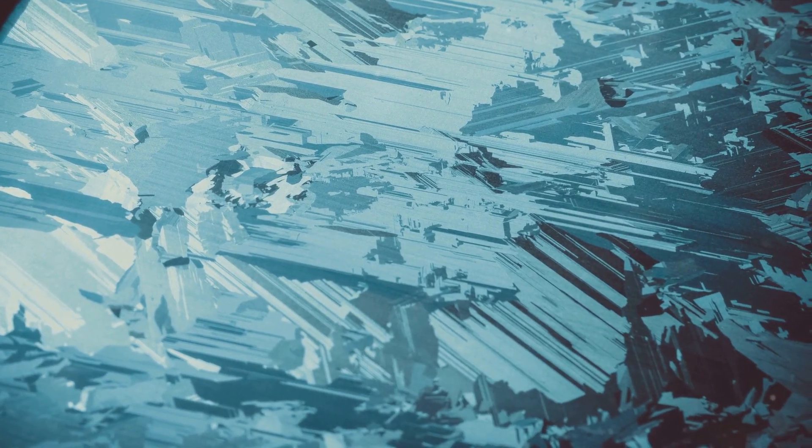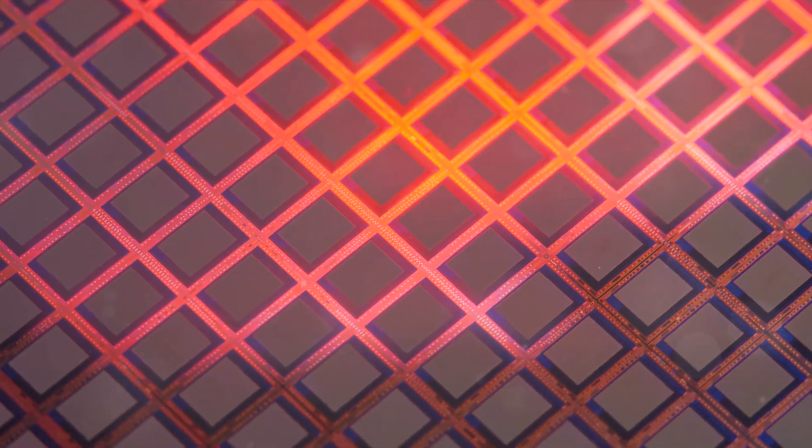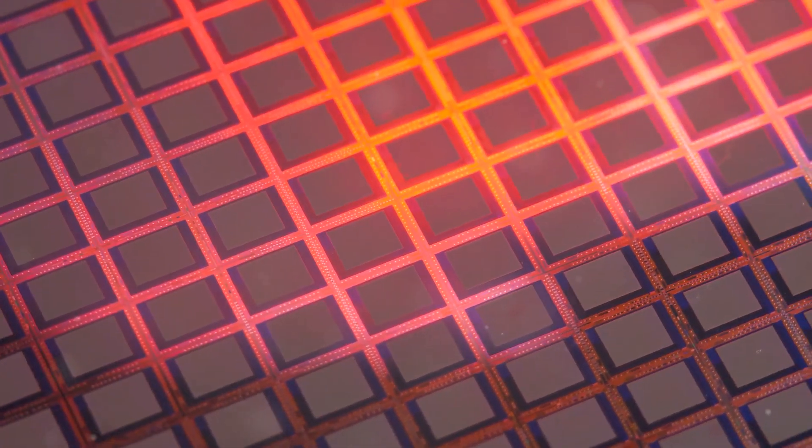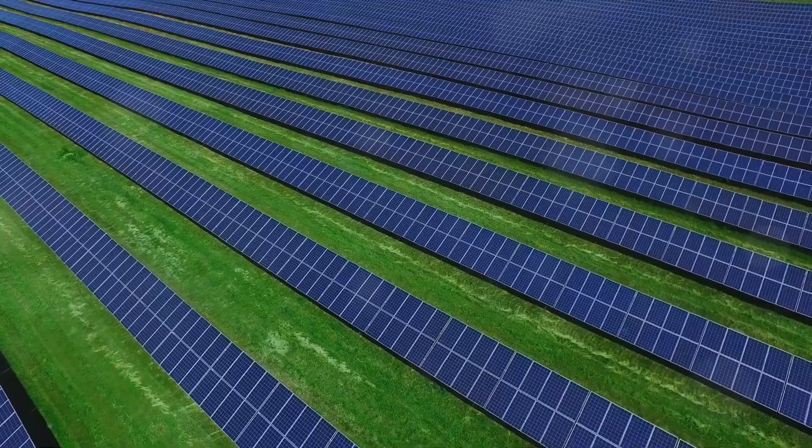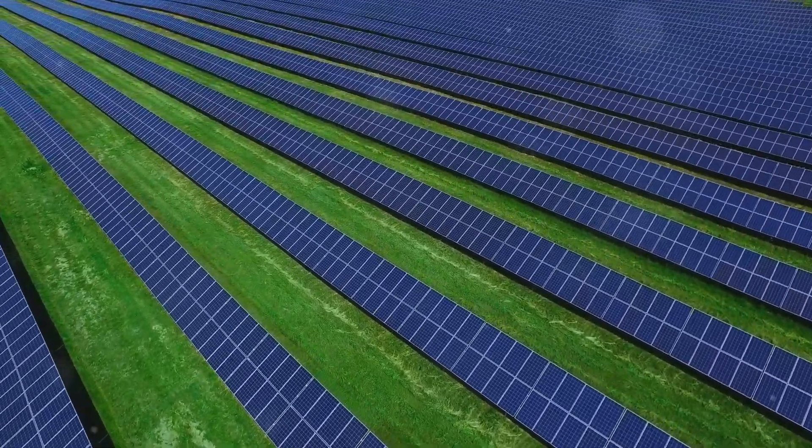The key ingredient in most solar cells is silicon, a semi-metallic element that is second only to oxygen in terms of its abundance on Earth. Silicon's semiconducting properties make it ideal for solar cells. So how do we transform this common element into a powerful energy converter?